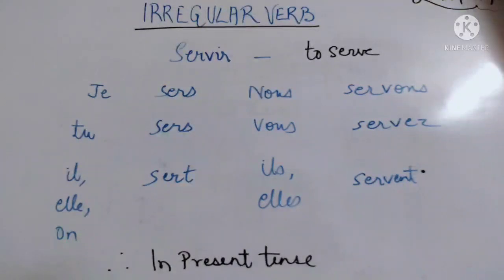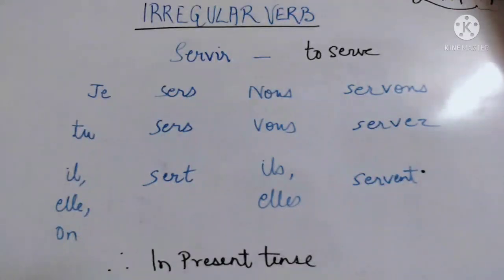For 'je', spelling is S-E-R-S. Same for 'tu'. For 'il', it is S-E-R-T. For 'nous', it is S-E-R-V-O-N-S. For 'vous', it is S-E-R-V-E-Z. And for 'ils', it is S-E-R-V-E-N-T.